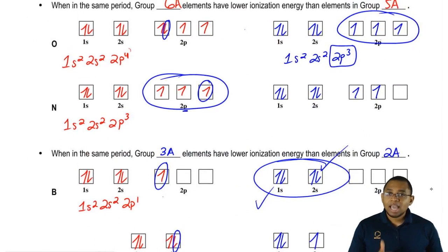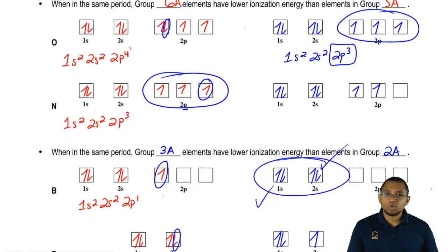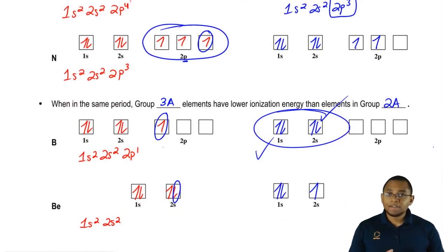Group 6A has lower first ionization energy than group 5A if they're in the same period. If they're in different periods, then we go back to the default trend we talked about when we looked at the chart.